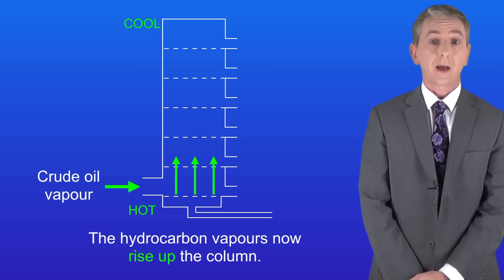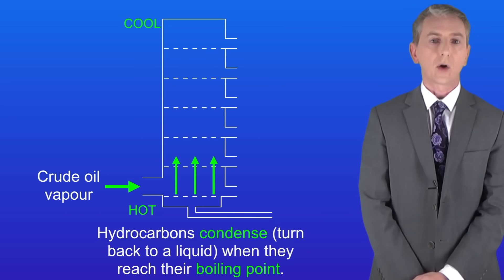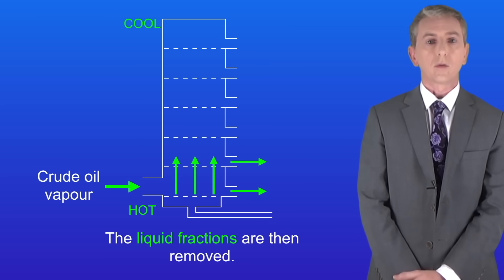The hydrocarbon vapours now rise up the column. Hydrocarbons condense when they reach their boiling point. In other words, they turn back to a liquid, and the liquid fractions are then removed.